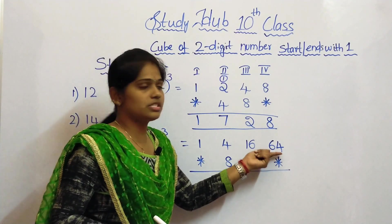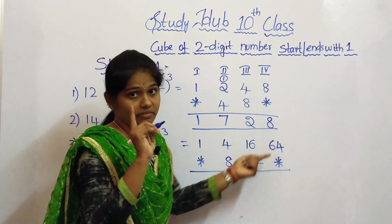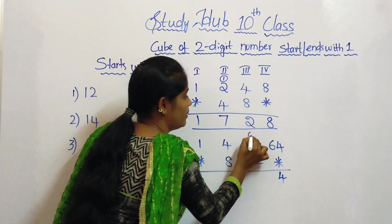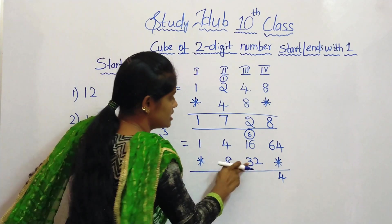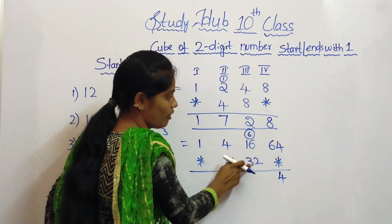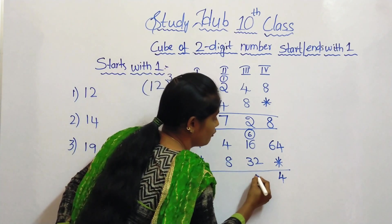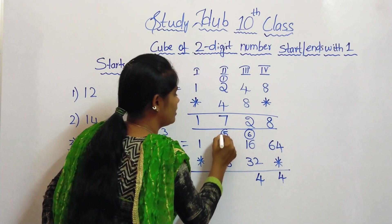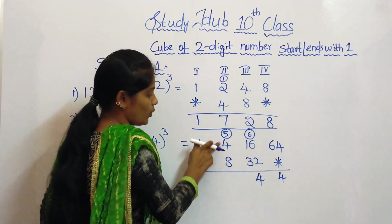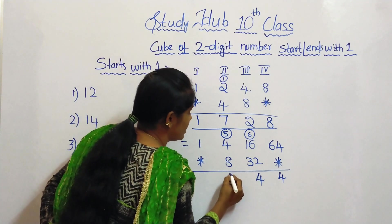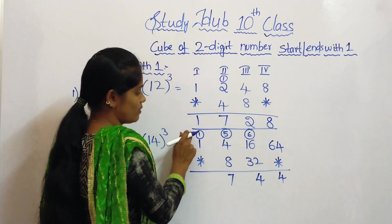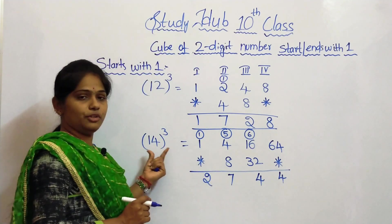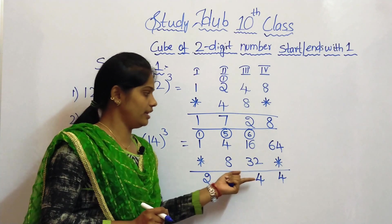Here we have 64, which is 2 digits, but we have to write only 1 digit. So write 4 here and carry forward 6. 16 plus 32 is 48. 48 plus 6 is 54 — write 4 here and carry 5. 8 plus 4 is 12, plus 5 is 17 — write 7 here and carry 1. 1 plus 1 is 2. This is the cube of the number 14. So 14 cubed is 2744.